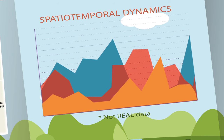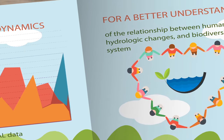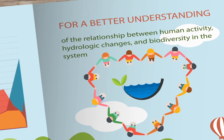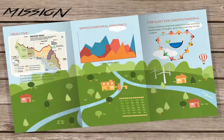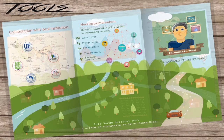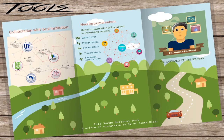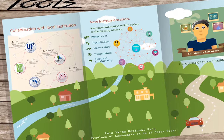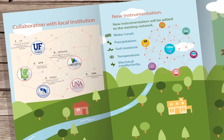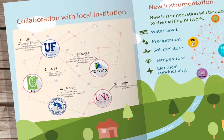An overall goal is to better understand the relationship between human activity, hydrologic changes, and biodiversity in the ecosystem. The tools for the game are historical rainfall and discharge data that has been constructed with the collaboration of local institutions.